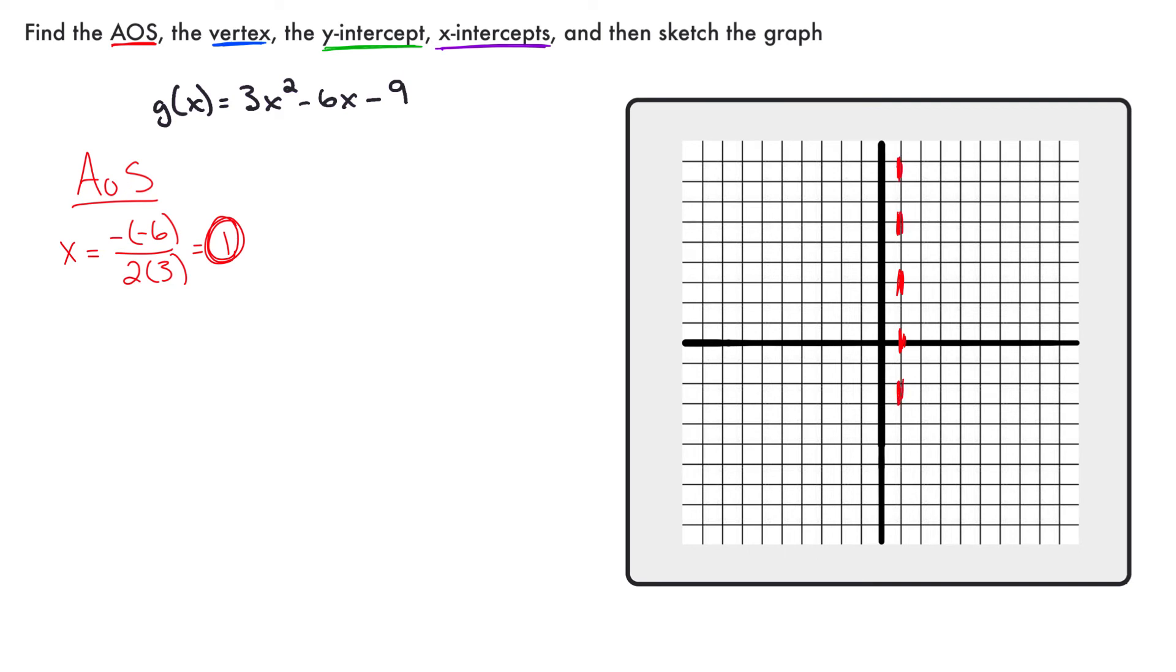I don't know where the vertex is, but I know it's going to be somewhere on this dotted line. Next, I've got to find the vertex. I take that positive 1 and I plug it into the function. g of 1 is going to equal 3 times 1 squared minus 6 times 1 minus 9. That's going to be equal to 3 minus 6 minus 9. 3 minus 6 is negative 5. Negative 5 minus 9 is negative 14.